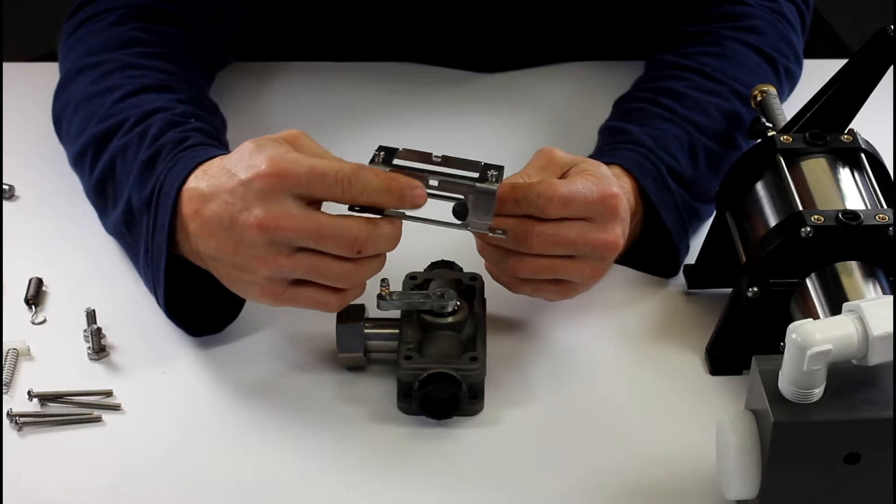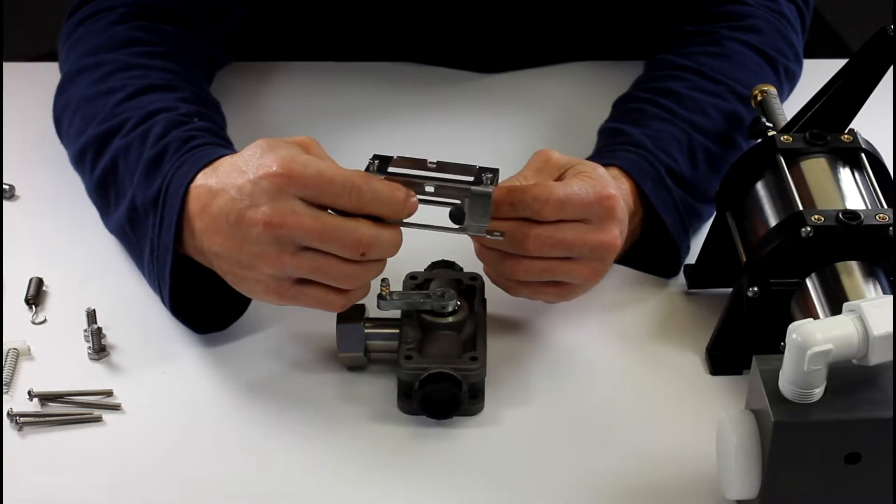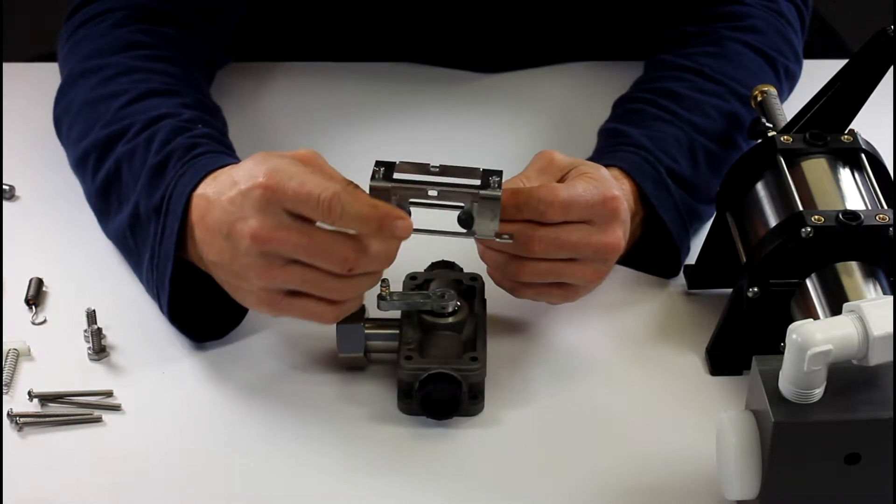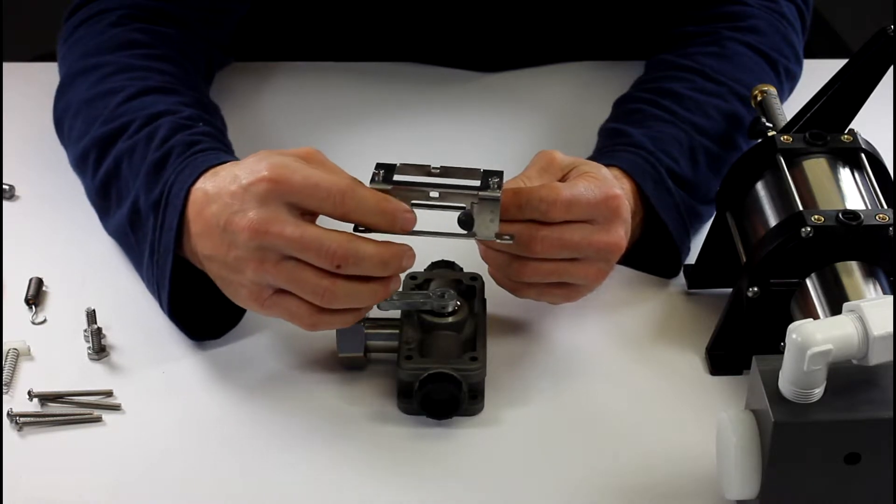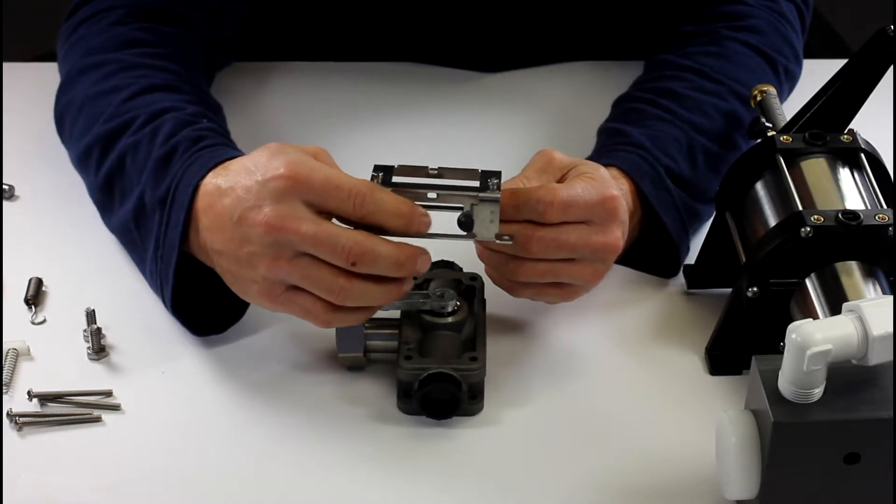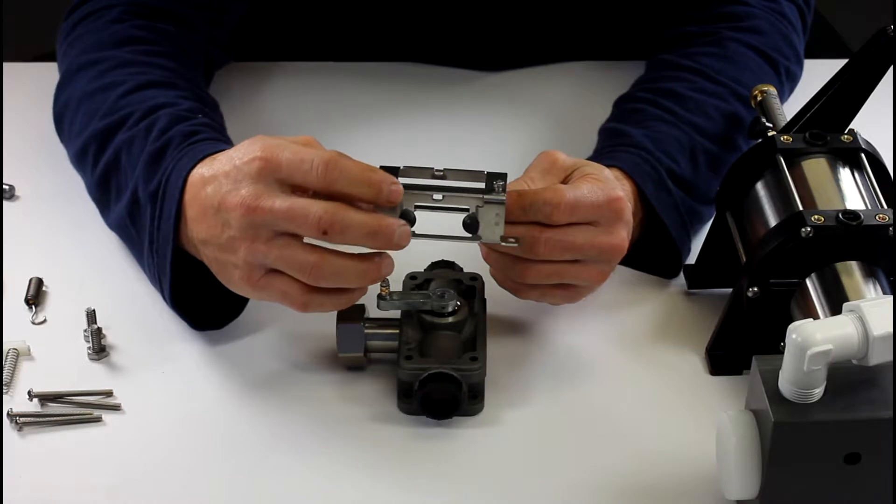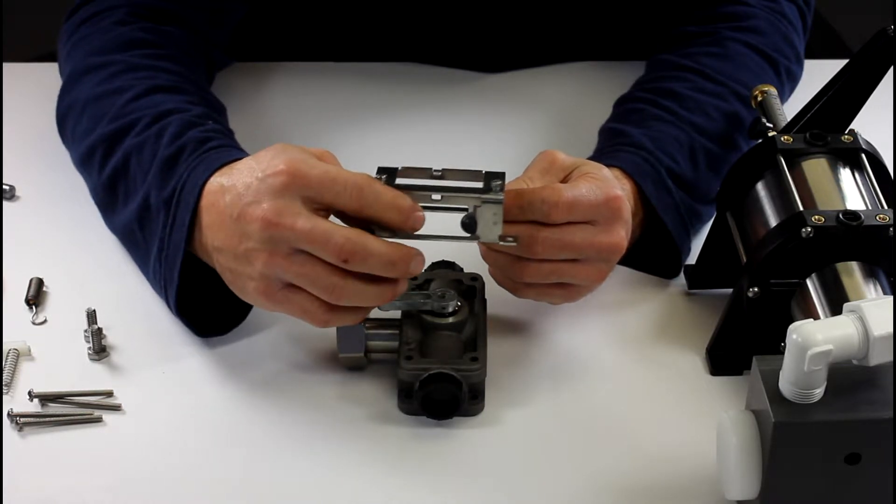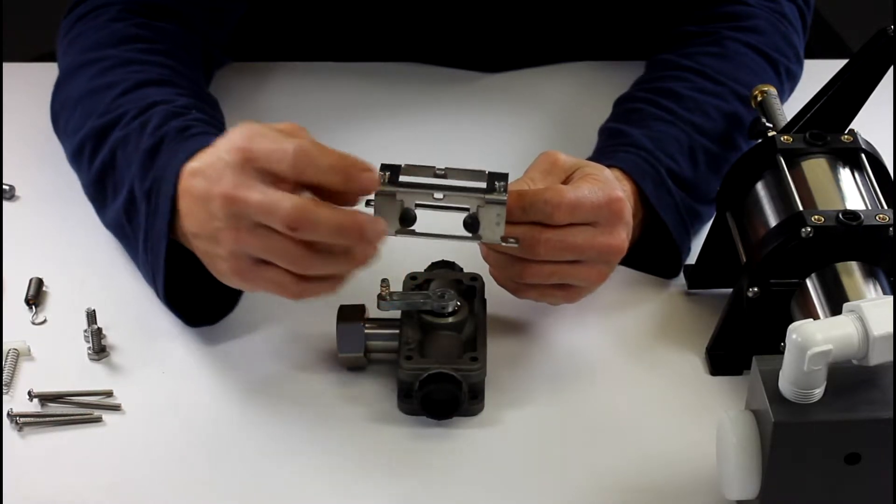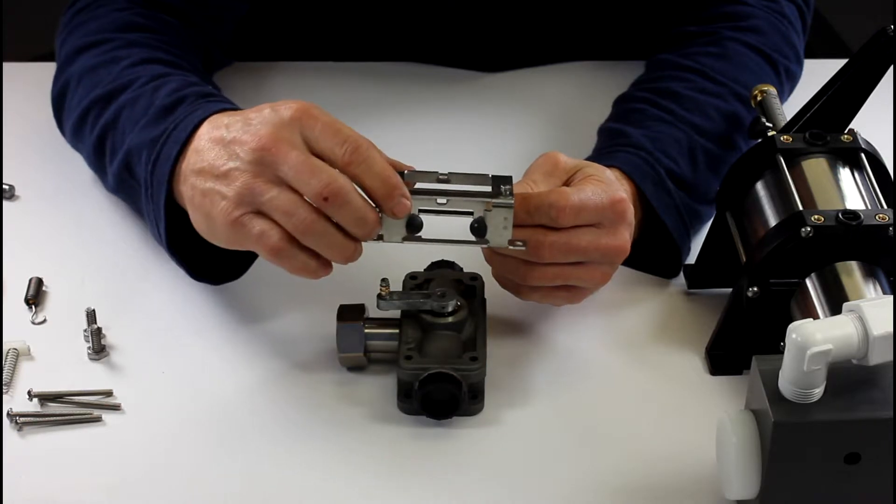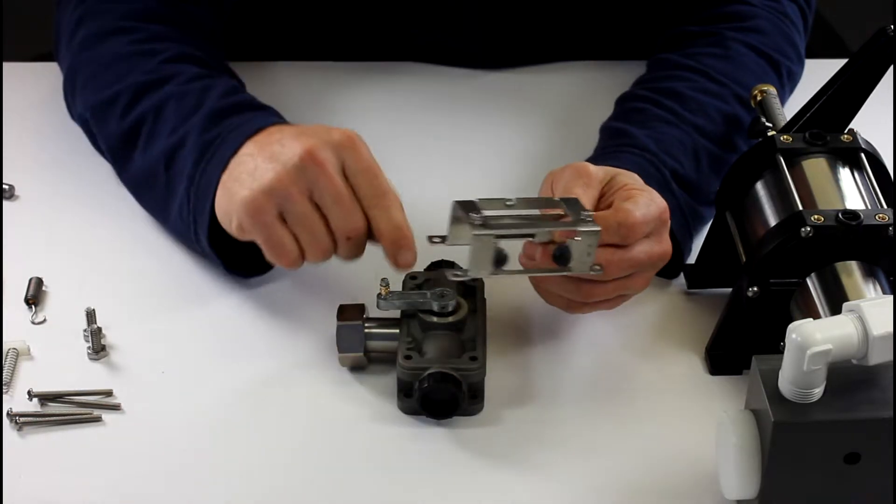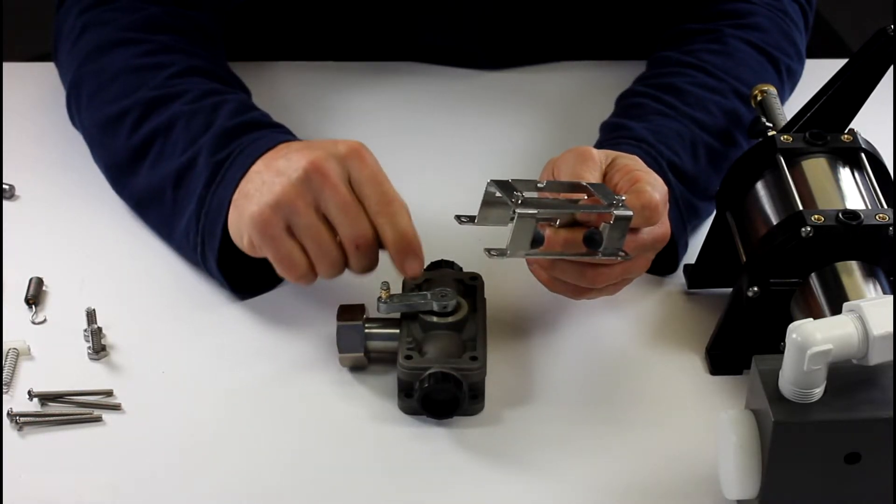And since you're doing this, you might as well inspect these bumpers and look for cracks. See if they're worn, if they have maybe softened up over time, heat, chemical attack, anything like that. You should replace them because they definitely need to be there for the timing of the pump and it saves on this toggle lever right here.